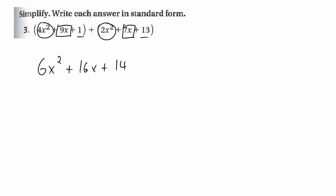It is really important that you remember you do not add the exponents. If you take 4 cm squared and add it to 2 cm squared, you do not get 6 cm to the fourth. Do not add the powers — only add the coefficients.